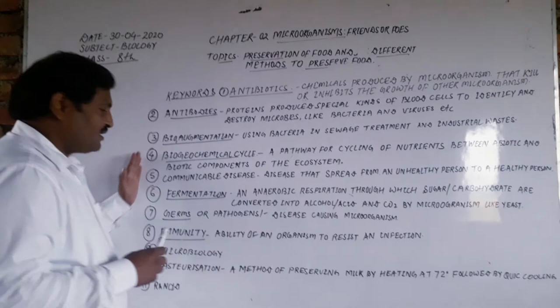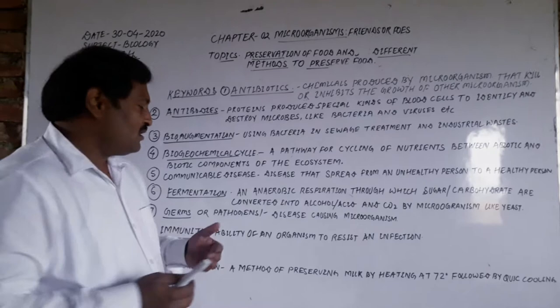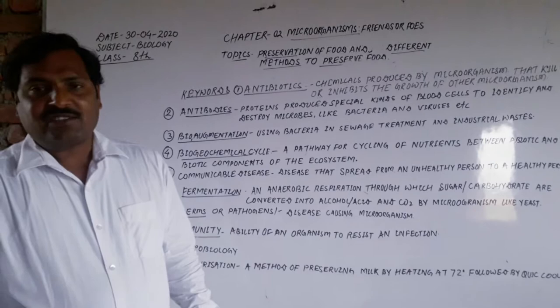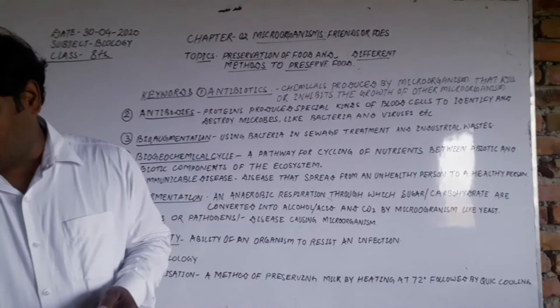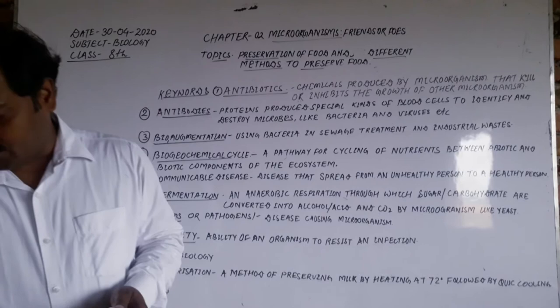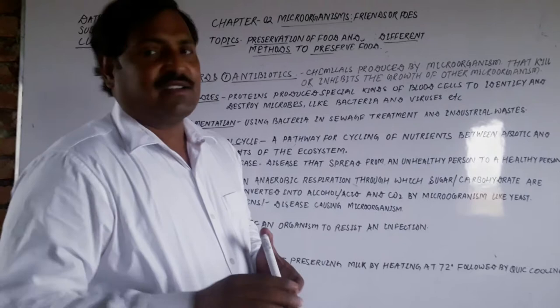After that, there is the concept of toxins. Some microorganisms release poisonous chemicals that affect our normal body system — these are called toxins. The last keyword is vaccines. A vaccine is a suspension of killed or weakened microorganisms that is administered to increase protection against a disease.